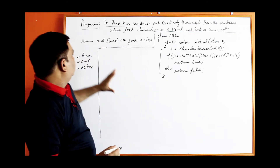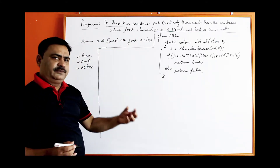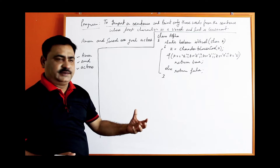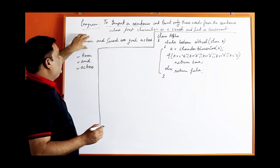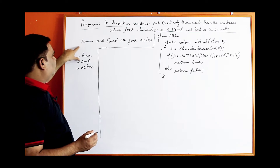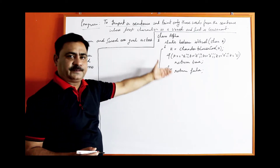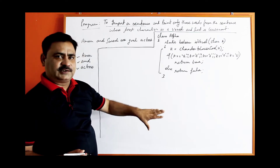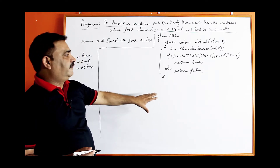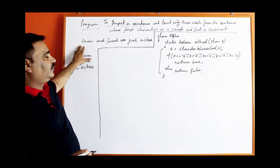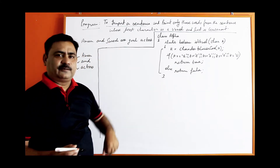From the sentence, in another function, we will form words — word by word. From each word, we will extract the first character and the last character and send them to this isVowel function. It will return true or false, and then we can compare: if the first character is true (vowel) and the last is false (consonant), then we can print that word.